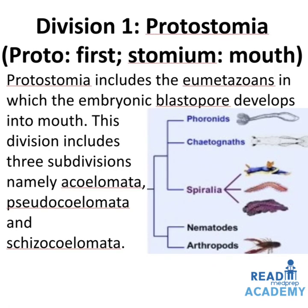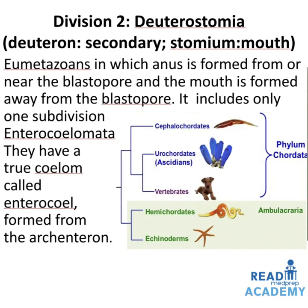Division 1 Protostomia: proto means first, stomia means mouth. Protostomia includes the eumetazoa in which the embryonic blastopore develops into the mouth. This division includes three subdivisions: aceolomata, pseudoceolomata and schizoceolomata. Division 2 Deuterostomia: deuteron means secondary, stomia means mouth. In eumetazoa in which the anus is formed from or near the blastopore and the mouth is formed away from the blastopore. It includes only one subdivision: Enteroceolomata, which have a coelom called enterocoelom formed from the archenteron. Examples: cephalochordata, urochordata and vertebrates belonging to phylum Chordata, and hemichordates.